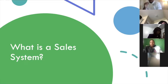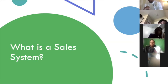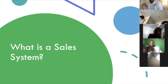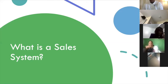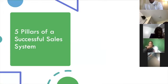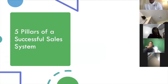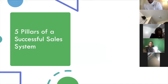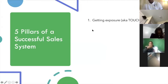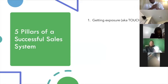Just to recap: a sales system is a systematic approach to generating leads and turning those leads into buyers. There are five pillars of a successful sales system. Let me give you all time to write that down — five pillars of a successful sales system. The first pillar is getting exposure — I call this getting touches.